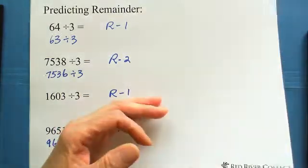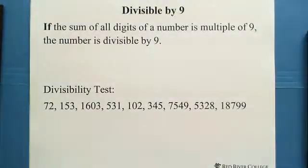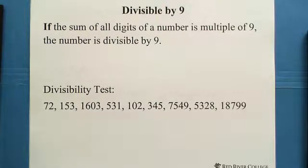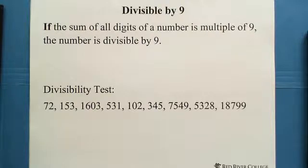Now let's look at the divisibility test for 9. The reason I put 3 and 9 together is that they have the same pattern. A number is divisible by 9 if the sum of all its digits is a multiple of 9. So we need the digit sum to reach 9, and then the number is divisible by 9.